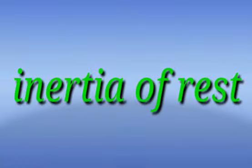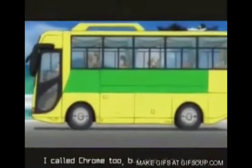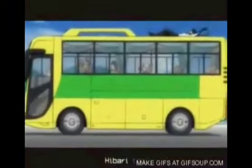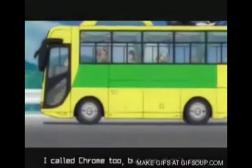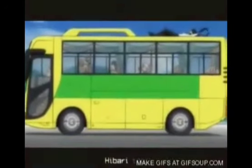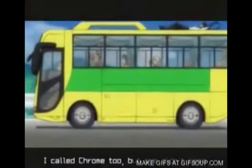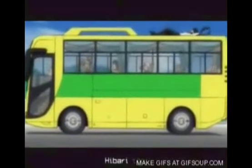The first type is inertia of rest — the tendency of a body at rest to continue to remain at rest unless a force is applied on it. For example, when a bus starts moving all of a sudden, passengers tend to move in the backward direction. This is because the part of the body in contact with the bus begins to move, while the other part of the body, due to inertia, continues to remain at rest.